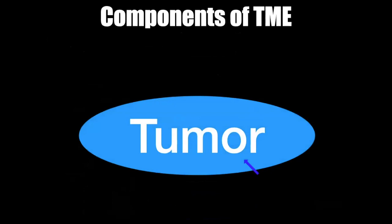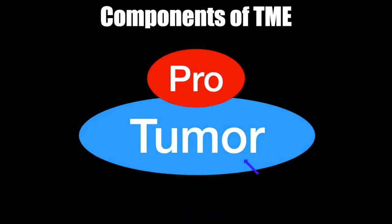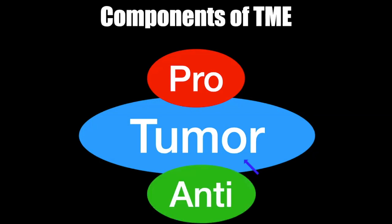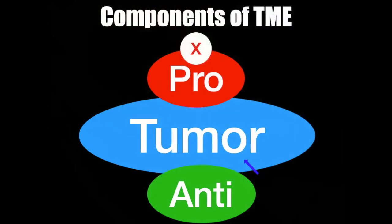Before going into the exact nature of the components, we have to understand that the tumor is surrounded by an environment where some elements are promoting the tumor to grow, invade, and metastasize — these are known as pro-tumorigenic components. Others inhibit tumor cell growth, cause death of the tumor, and are known as anti-tumorigenic factors. To win the fight against tumor, we have to inhibit the promoters and stimulate the anti-tumor activity so that the tumor can be successfully removed from the patient.